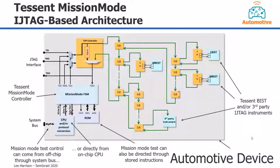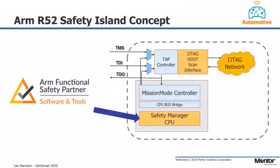Only one of these methods is required. For the CPU-based approach, Mission Mode has a simple CPU interface that hooks up to any CPU. For customers who do not have a CPU readily available, through the Tessent Safety ecosystem we have tried to make this as simple as possible. Working with ARM through their functional safety partnership, we can help customers integrate the ARM Cortex-R52 automotive-grade CPU as their safety manager along with our Mission Mode controller, creating a dedicated safety island — an almost out-of-the-box solution providing a fully featured safety island function, which is critical as we target ASIL D for level 3+ ADAS-type systems.